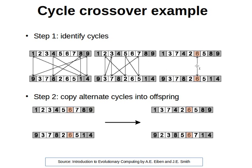The only remaining element is 6 — there's no cycle, so 6 stays as it is. We copy alternate cycles into the offspring. We can actually produce 2 children rather than 1. We copy the first cycle from the first parent into the first child, and the second cycle from the second parent. For the second child, we copy the elements in the first cycle from the second parent, giving us another child.